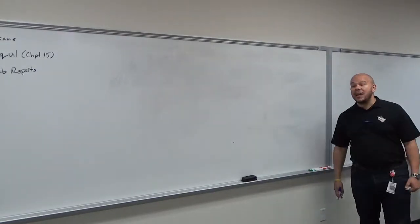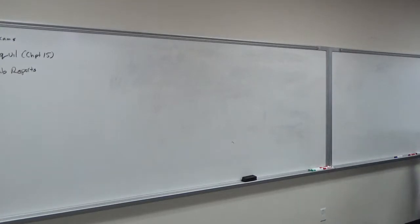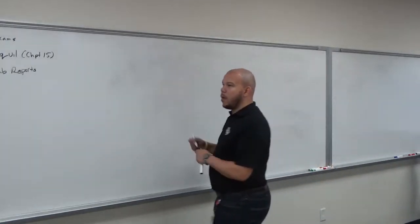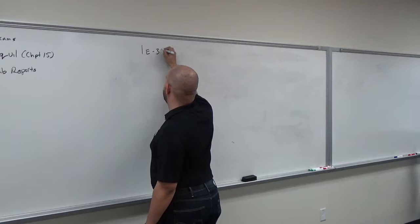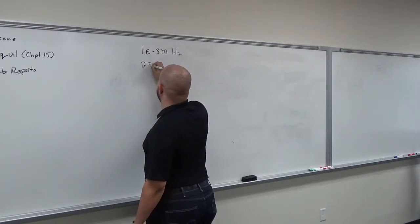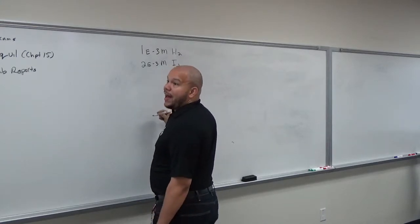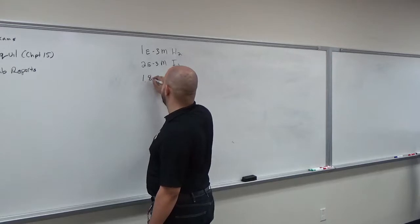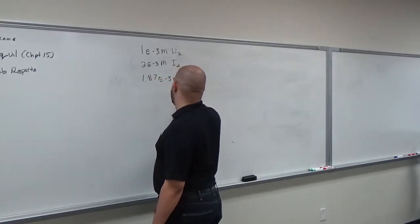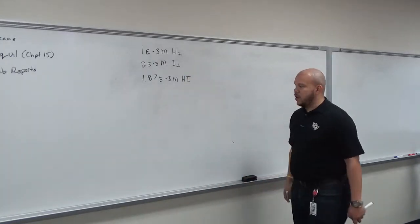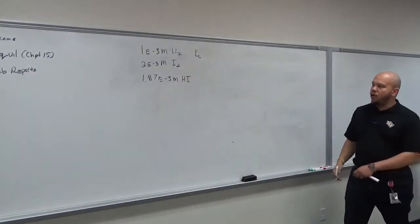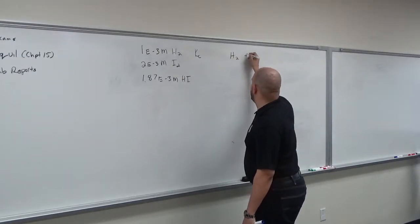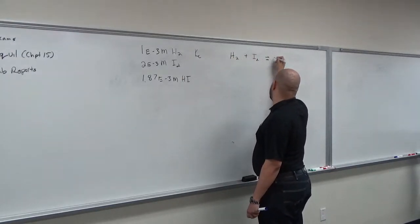Once you've done that, you can calculate equilibrium constants using the math you've figured out. The PowerPoint gives us this situation: a closed system has 1×10⁻³ M H2 and 2×10⁻³ M I2. At equilibrium, we have 1.87×10⁻³ M HI. The problem wants us to find Kc for the reaction H2 + I2 → 2HI(g).